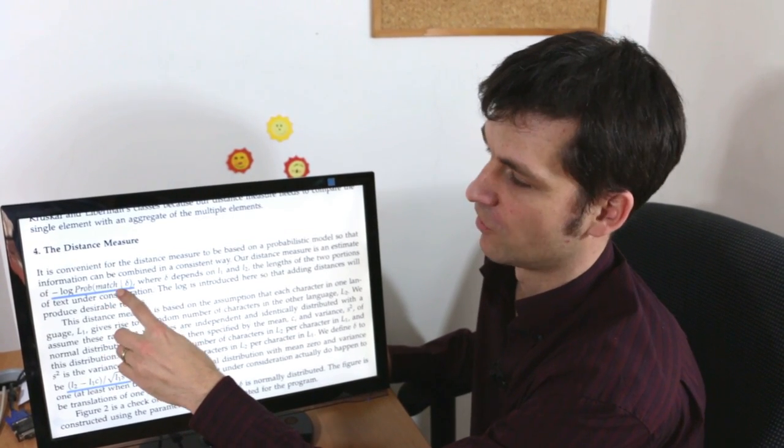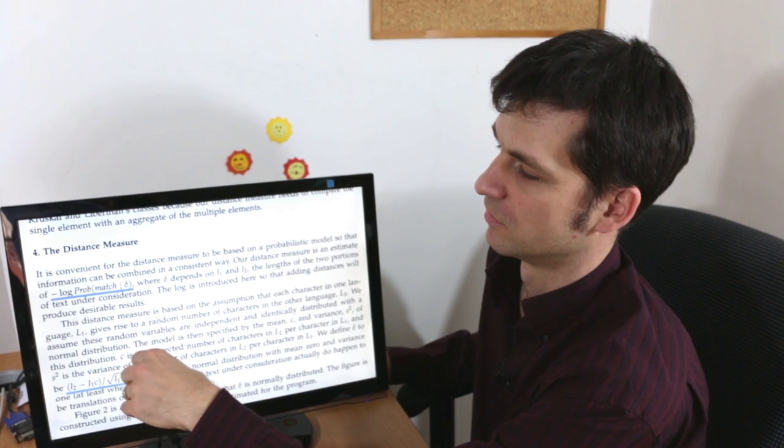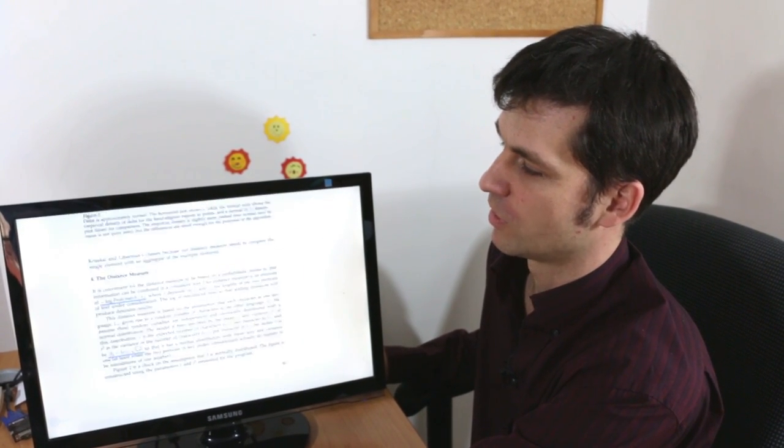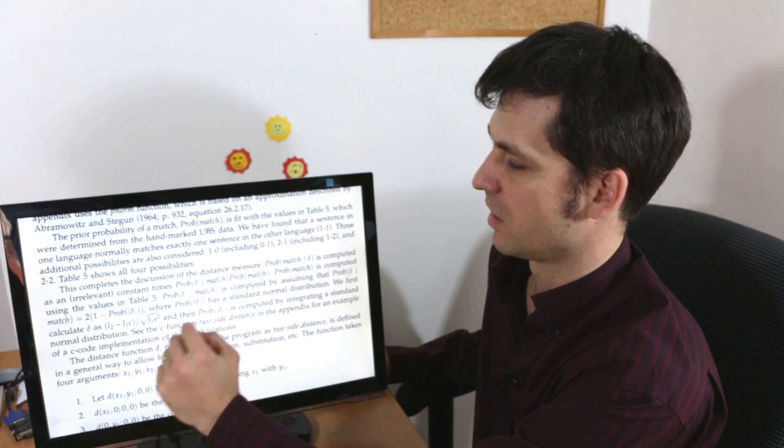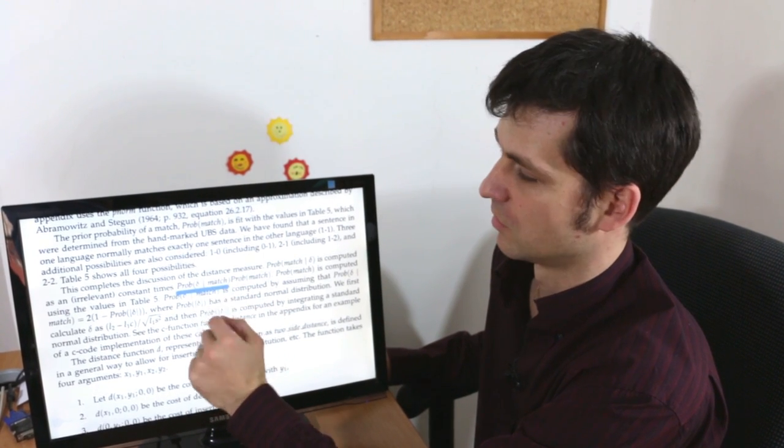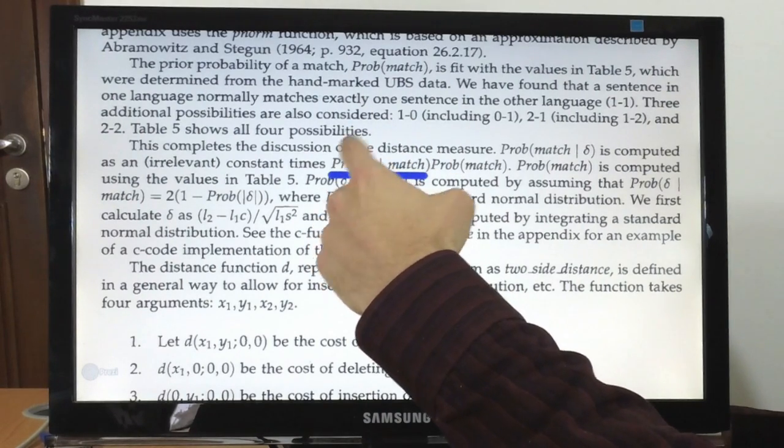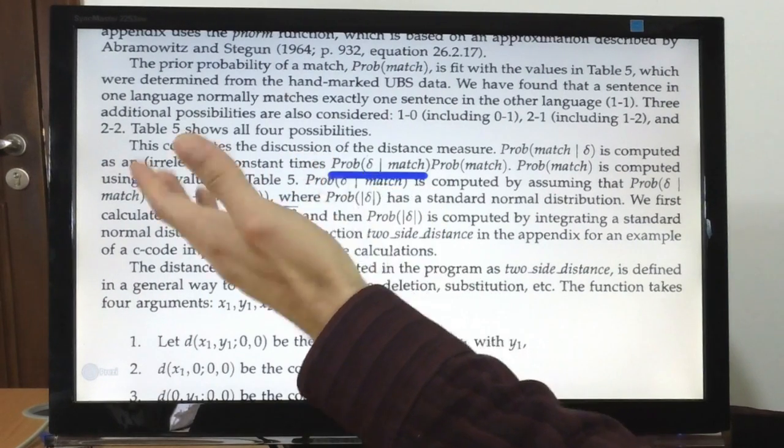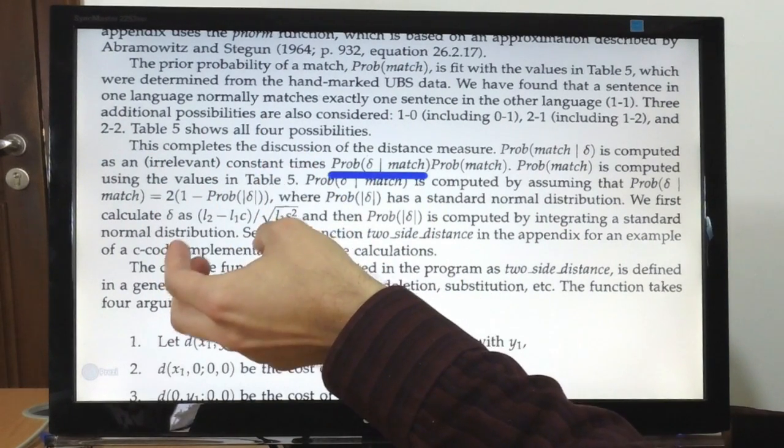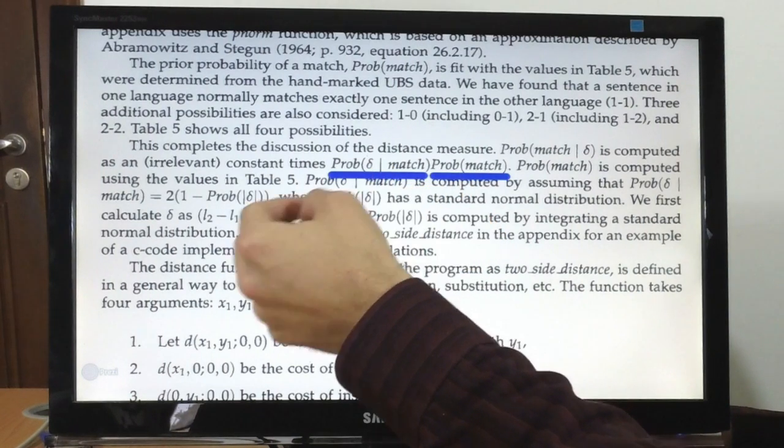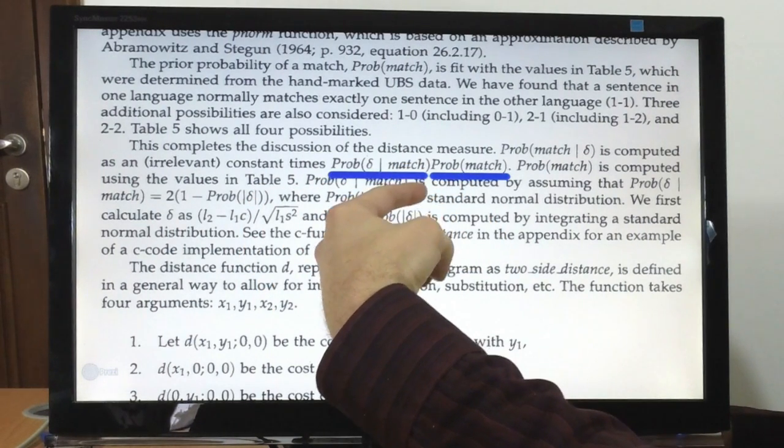So how is this probability of match given the distance defined? Gale-Church do proper probabilistic reasoning but we can summarize that they simply use two components of the probability. One of the components describes our surprise of seeing a particular difference in length assuming that the two segments matched well and the other component is a prior probability of the match.